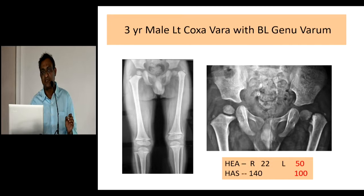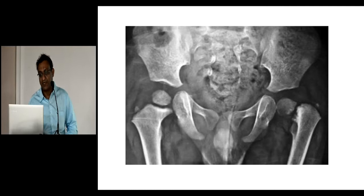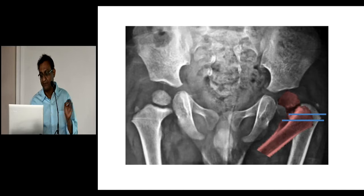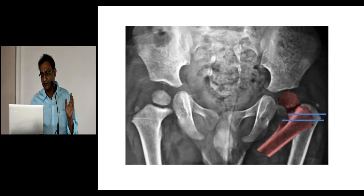This is a child with coxa vara. We need to correct this deformity and we are looking for a device that will allow us to plan the correction and hold the correction. In coxa vara the physis is vertical and needs to become horizontal; the neck-shaft angle needs to be corrected. First, we put the hip in the desired position by adducting it, and once we decide where the hip should be, we place two pins which are horizontal in the proximal femur.